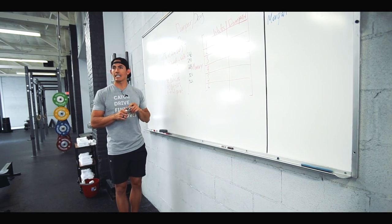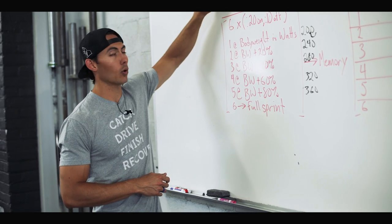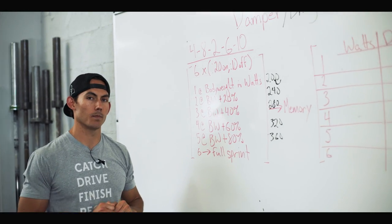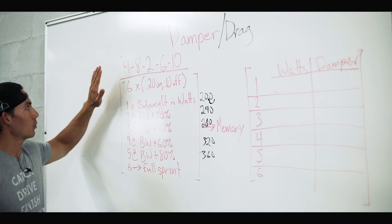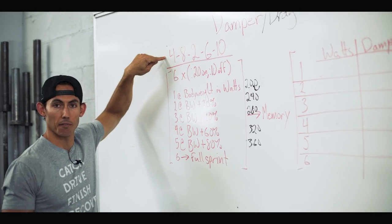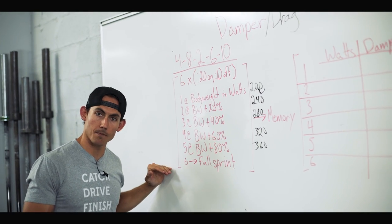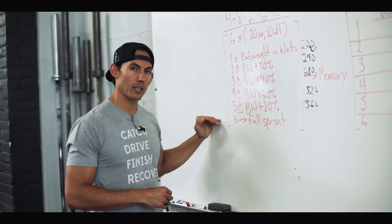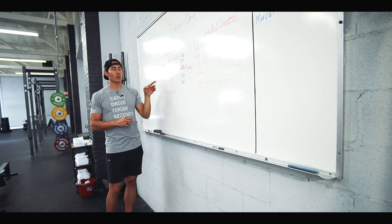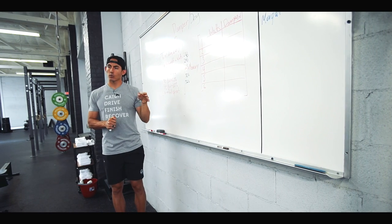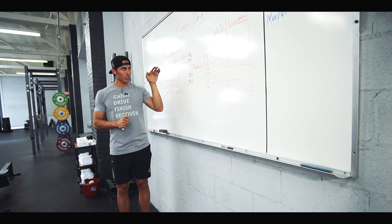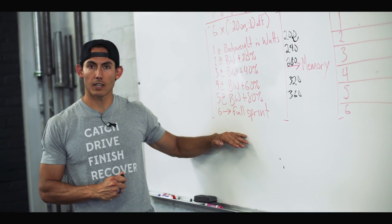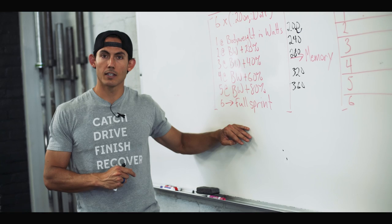I mentioned that you're going to be doing this whole thing five times through. That's because each time you do it you are going to hold a specific damper setting: 4, 8, 2, 6, and 10 in that order. Round one you set your damper to a 4 and then do everything we just said, six rounds of 20 on 10 off following these prescriptions. You will have programmed it as intervals time: 20 seconds of work, 10 seconds of rest.